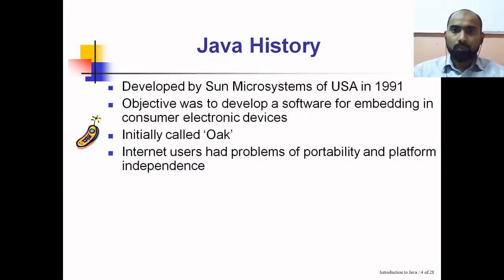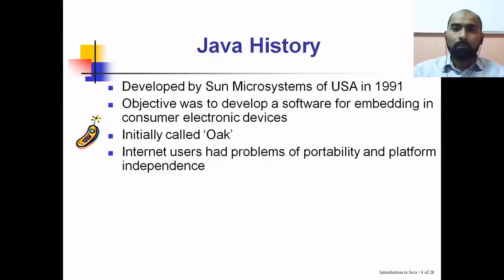A program written on a Windows platform, when executed on a Linux platform, was throwing errors. This is where Java found its way into the internet. Since Java is a portable, cross-platform language, programs developed in Java can be executed on multiple platforms. Java applets were developed that were capable of running on different platforms. Initially not all browsers supported Java applets, so Sun Microsystems developed their own browser called Hot Java.